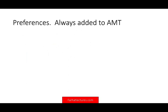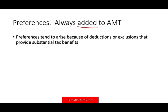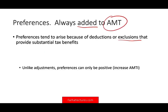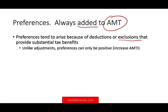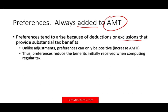Let's take a look at preferences. Preferences are always added to AMT. Preferences arise because of a deduction or exclusion that provides substantial tax benefit. When it comes to AMT, they take away that preference because they think you make too much money. So unlike adjustments, preferences will always increase AMT. Preferences reduce the benefit initially received from computing regular tax.